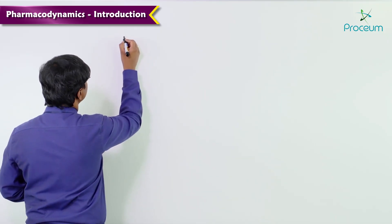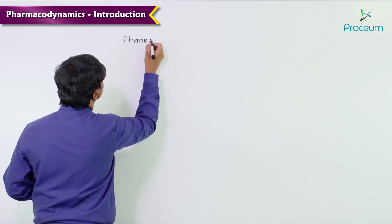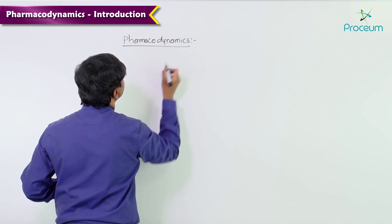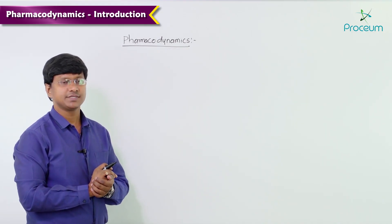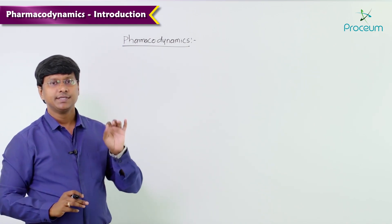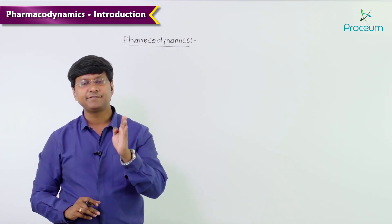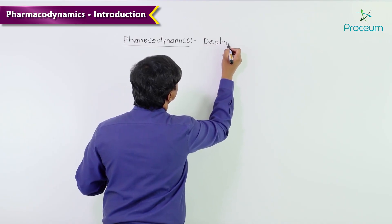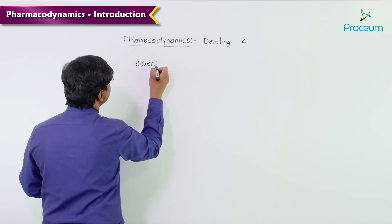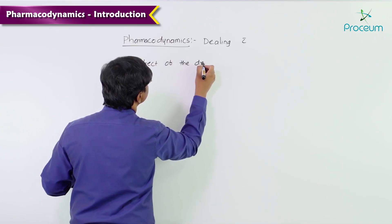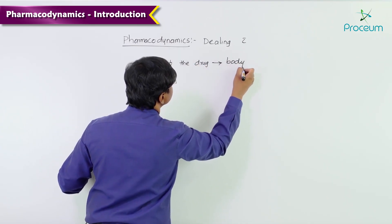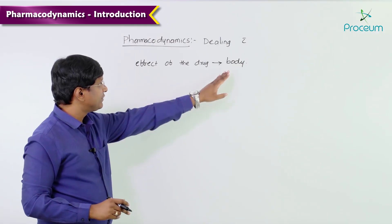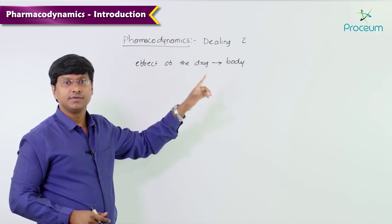Let me discuss pharmacodynamics. Pharmacodynamics is the study dealing with the effect of drugs on the body. Pharmacokinetics, on the other hand, is exactly the opposite — it is the effect of the body on the drugs. Whereas pharmacodynamics is the study dealing with the effect of the drugs on the body.